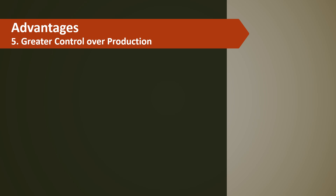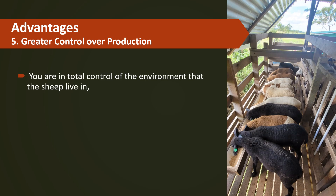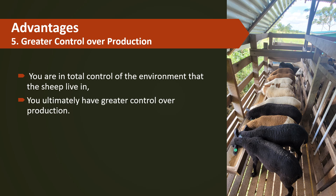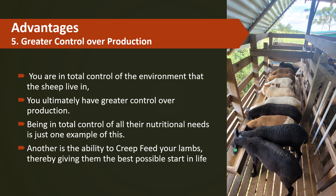The fifth advantage is greater control over production. As a result of being in total control of the environment that the sheep live in, you ultimately have greater control over production. Being in total control of all their nutritional needs is just one example of this. An example of better nutrition is the ability to creep feed your lambs, thereby giving them the best possible start in life.